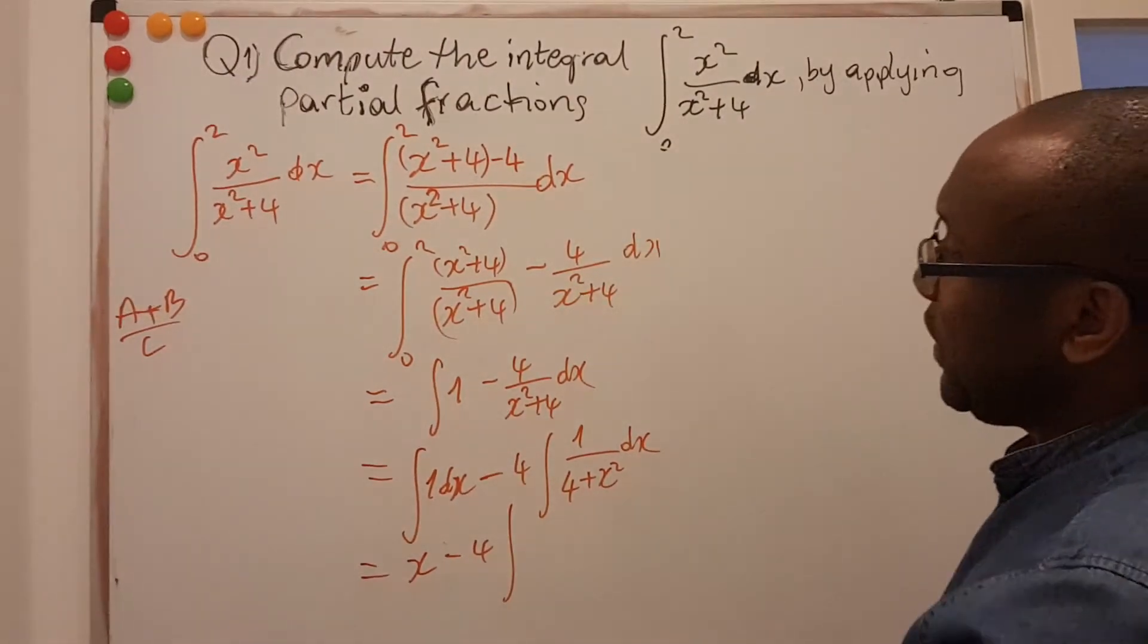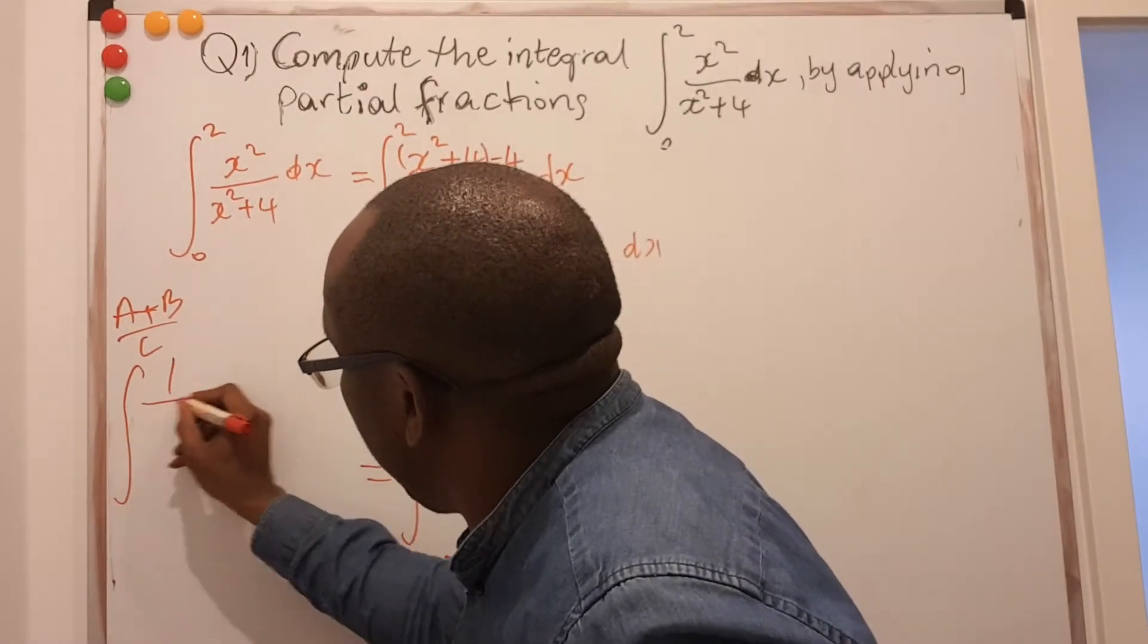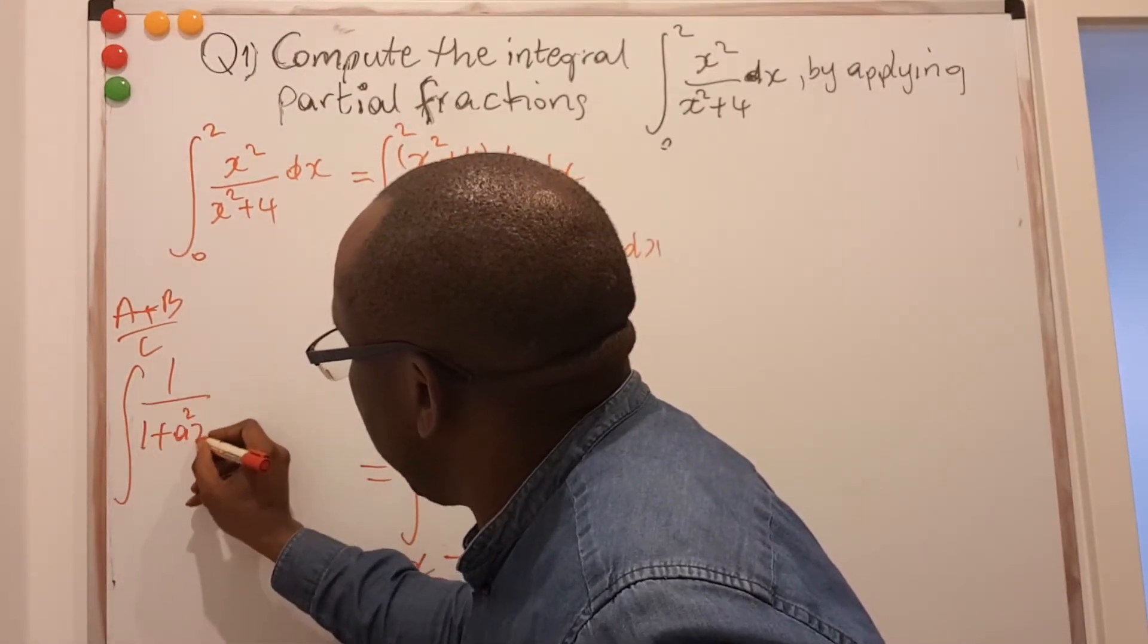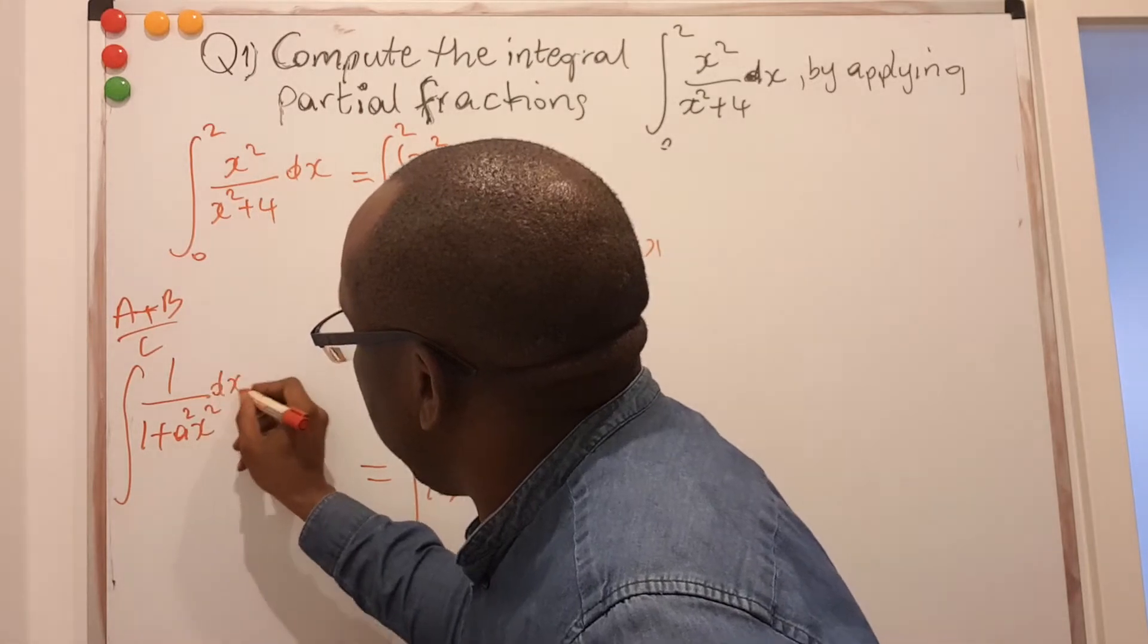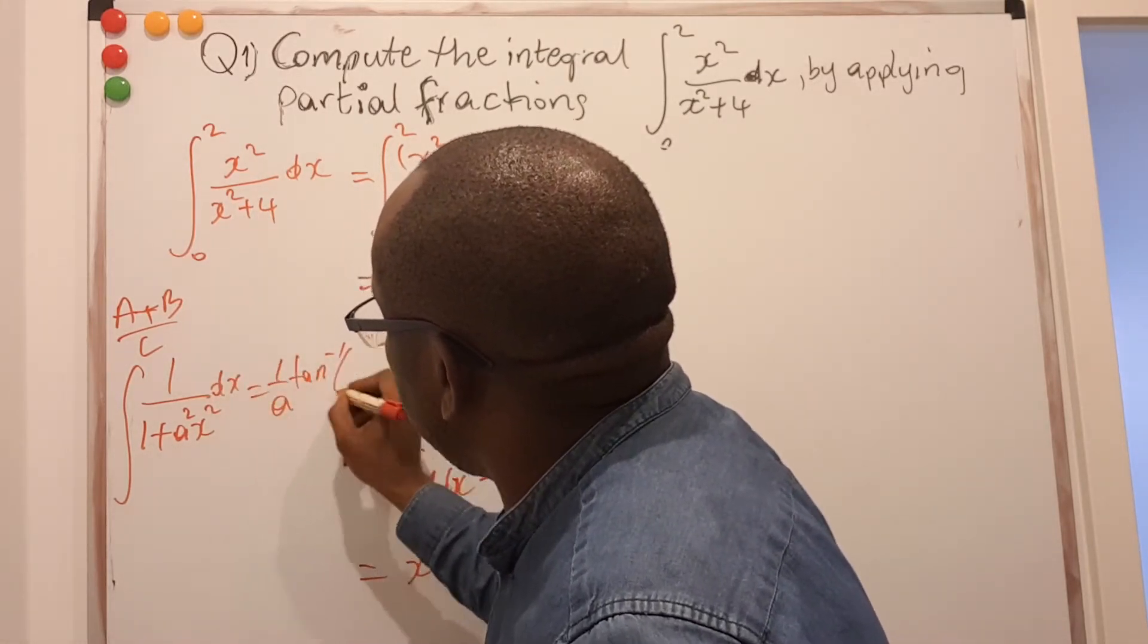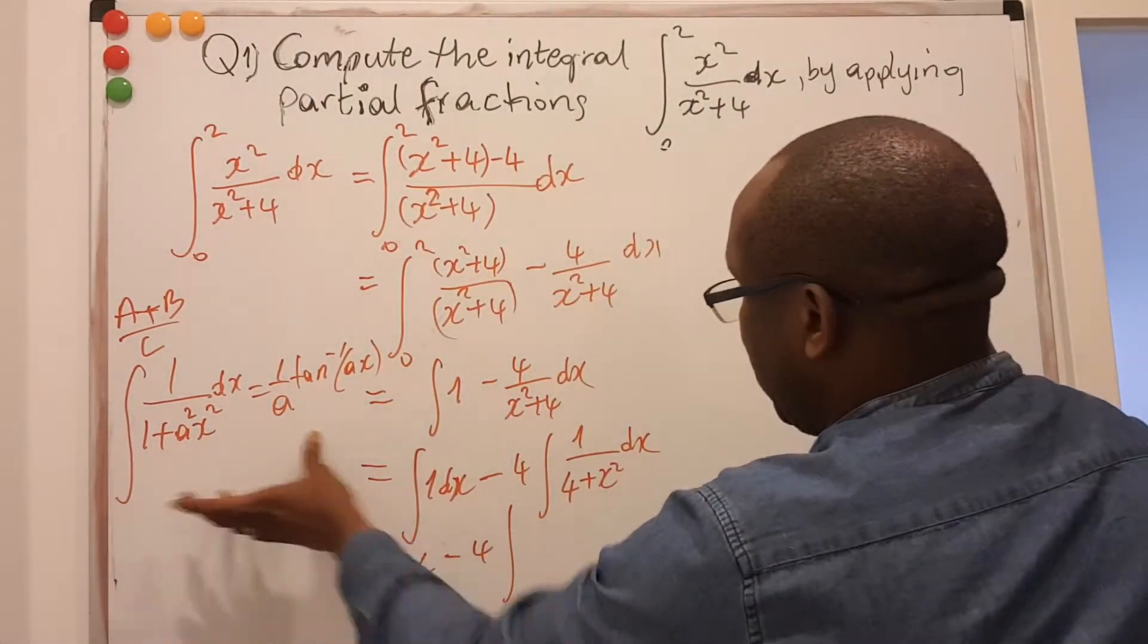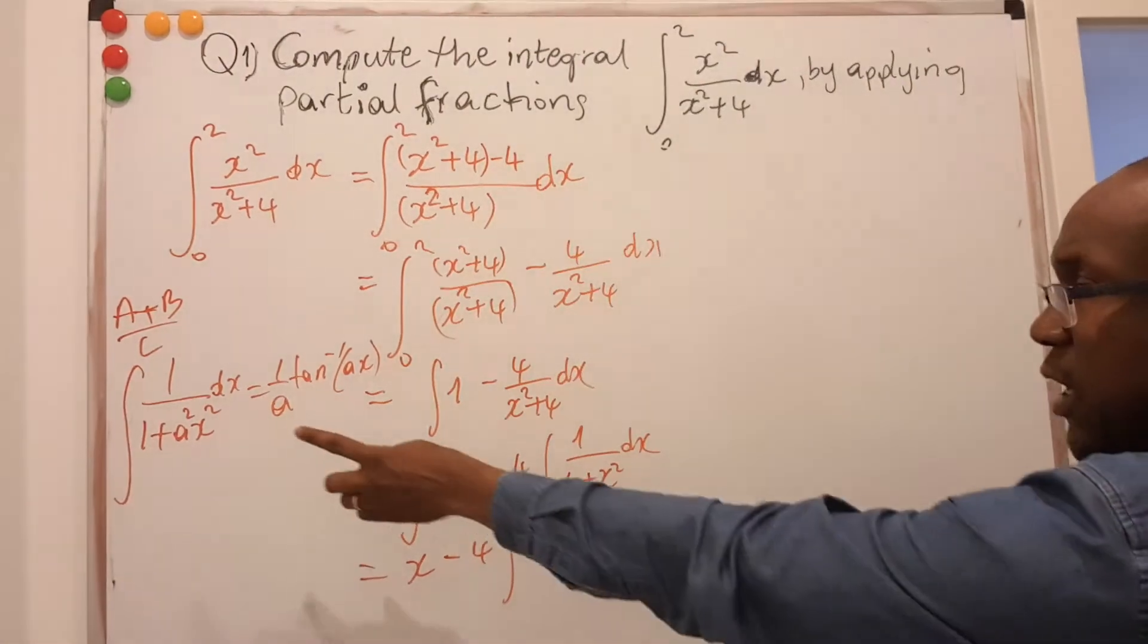I have to play a little with this. I know that the integral of 1 all over 1 plus a squared x squared dx is the same as 1 all over a tan inverse of ax. So I will try to use that.